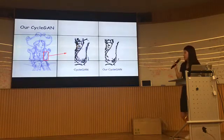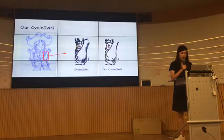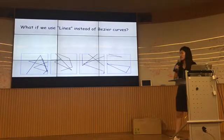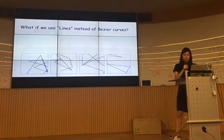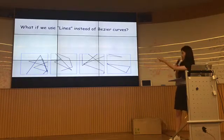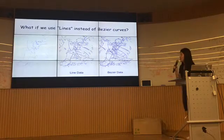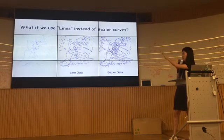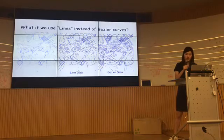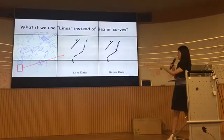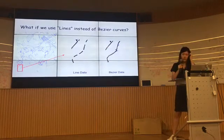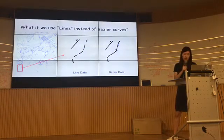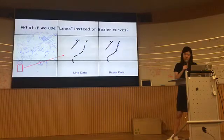If we zoom in, we can confirm the noise has disappeared as desired. Why do we use Bezier curves? What if we just use straight lines instead? If we use line-generated synthetic data, we get a result where many curves are cut into simple lines — because the synthetic data doesn't contain any curved lines, the generator doesn't know how to generate curves, so it cuts them into multiple straight lines.